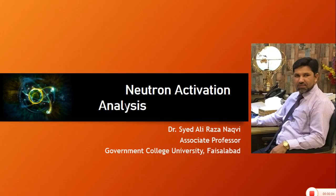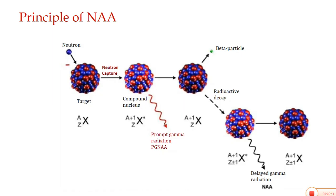Bismillahirrahmanirrahim. Dear students, last time we studied about Neutron Activation Analysis and its principle. Let us go through the principle again: when a neutron is bombarded over a target material, it gets excited and this excitation gives prompt gamma radiation emission. These prompt gamma radiations are used for the determination of short-lived radionuclide concentrations.